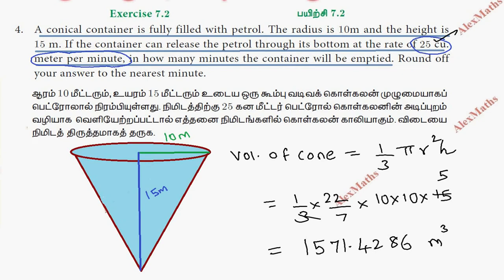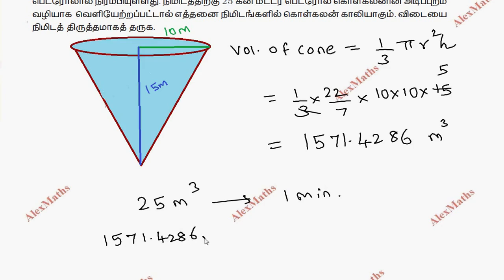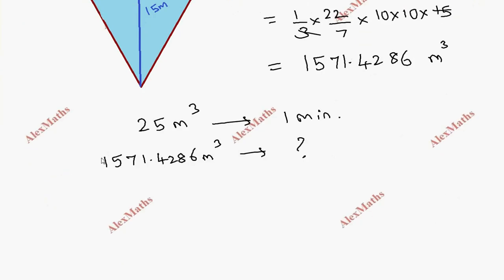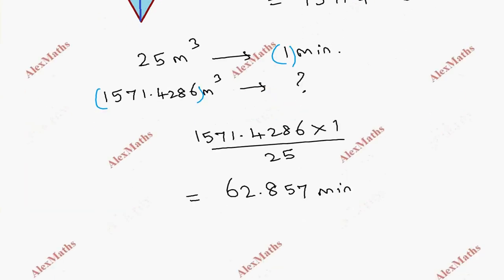The release rate is 25 cubic meters per minute. So 25 meter cube is released in 1 minute. Now the question is: 1571.4286 meter cube — using proportion, divide by 25. The value will be 62.857 minutes.